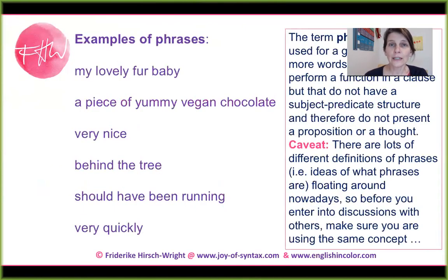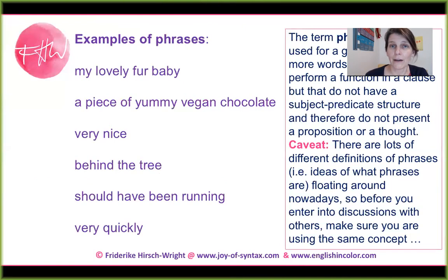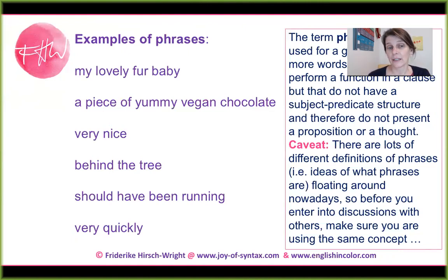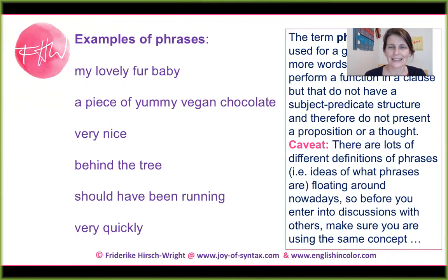Phrases. Traditionally, phrases are defined as two or more words that together perform a function, but do not have the structure of a subject-predicate relationship. Phrases do not predicate something; they are not complete thoughts. They are elements that can be seen to serve some function. Examples: 'my lovely fur baby' is a noun phrase, 'a piece of yummy vegan chocolate' is a noun phrase, 'very nice' is an adjective phrase, 'behind the tree' is a prepositional phrase, 'should have been running' is a verb phrase, and 'very quickly' is an adverb phrase.